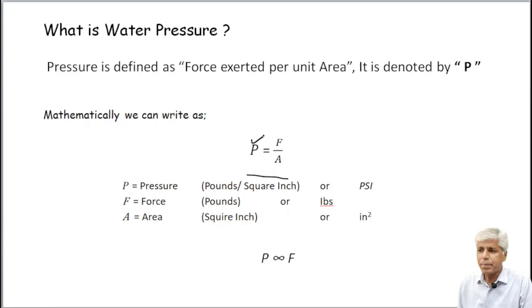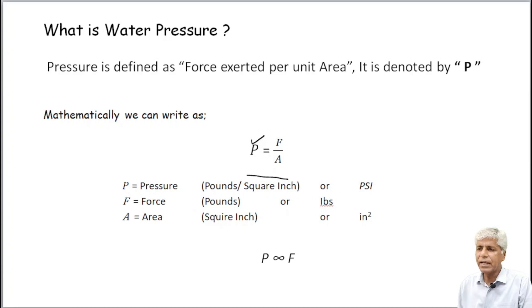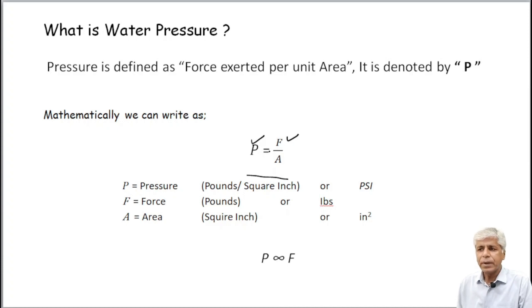P is the pressure in pounds per square inches. F is the force in pounds. A is the area in square inches. Here, pressure P is equal to force divided by area.